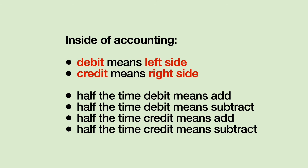In accounting, it's best to think of debit as the left side of an account, and credit means the right side of an account. You've got two columns: the debit column on the left and a credit column on the right. Half the time in accounting, debit means to add, and half the time debit means to subtract.